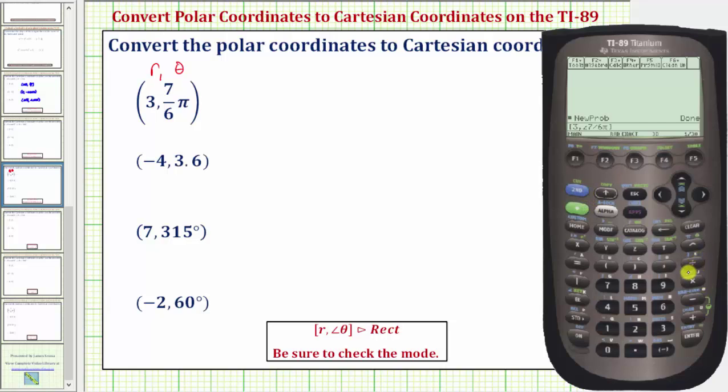Now we want to select the rectangle command or rectangle function. This is located under the math menu or the catalog. Let's go to the catalog. We want to go down to the R's. Notice how there's R above the two, so we press two. The cursor goes down to the R's and we're looking for the rectangle command or rectangle function.